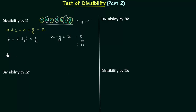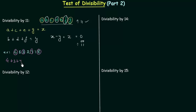Let's see one example. The number is 4832718. We have to find out the sum of digits at odd places: 8, 7, 3, 4 are the digits at odd places. So 4 plus 3 plus 7 plus 8 is equal to 22.